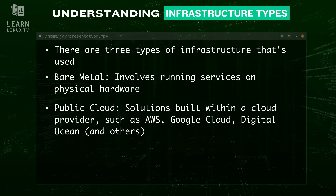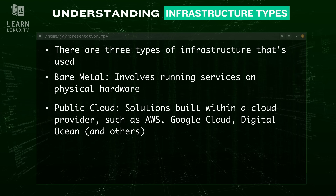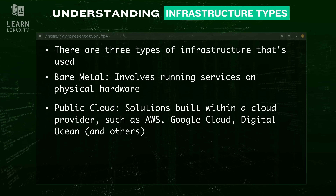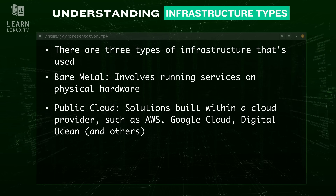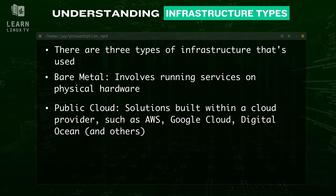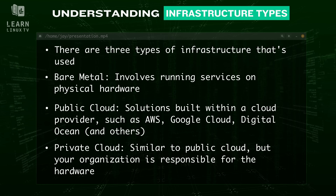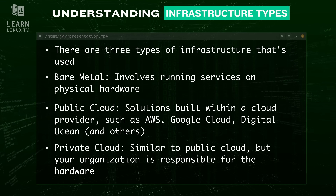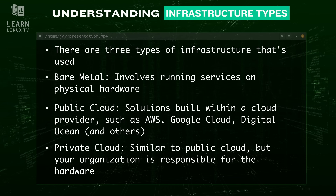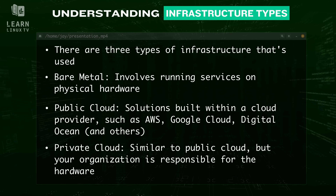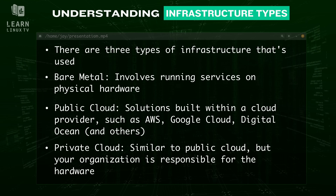Second, public cloud deployments are those built within a cloud provider, with common providers being AWS, Google Cloud, Azure, DigitalOcean, and others. In this scenario, you're using someone else's server infrastructure to run the services your business needs. The downside is that you don't have full control or visibility on how your data is being handled — you're basically trusting someone else to do a job and hoping that they do. Third, private cloud deployments are similar to public cloud, with the difference being that the company runs everything themselves, including the underlying virtualization engine. While private clouds are more difficult to implement initially, you gain full control and full visibility, and you can customize and tune your environment for the best possible performance, which directly benefits big data.